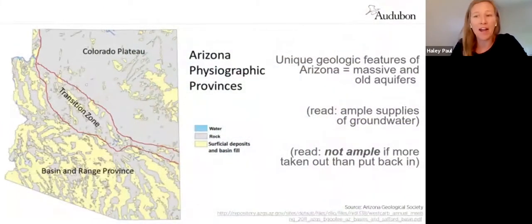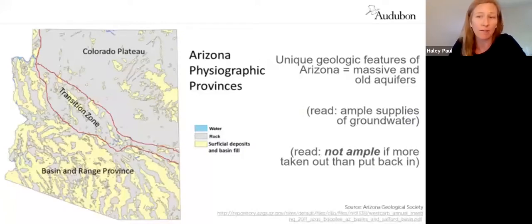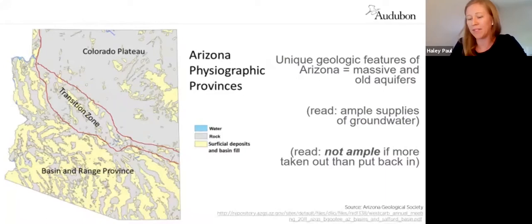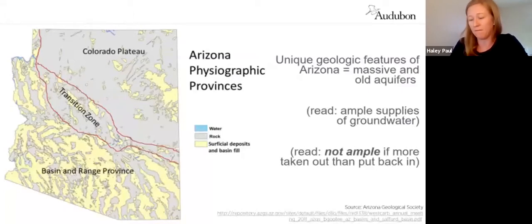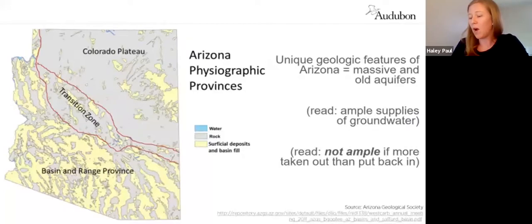In a large portion of Arizona — what is called the Basin and Range Province — we have unique geologic features that have allowed for large deposits of water to accrue over millions of years. While the hydrogeology of the Basin and Range aquifers allowed for the accrual of ample water supplies, we must remember that it took millions of years to accrue, and if not managed sustainably it can take just decades to deplete. Much of the water we utilize from these aquifers is ancient water.